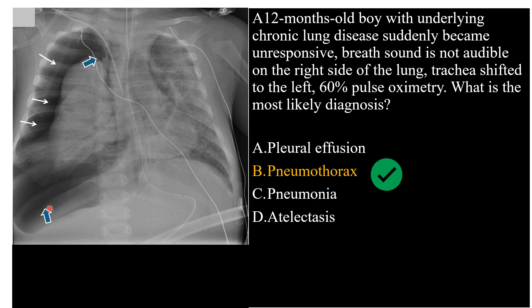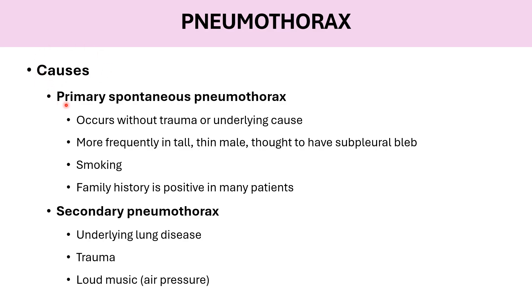There is a large amount of air in the right pleura with shift of the mediastinum to the left — a classic case of pneumothorax. Causes: primary spontaneous pneumothorax occurs without trauma or underlying cause, more frequently seen in tall thin males, associated with pleural blebs and smoking, with possible positive family history. Secondary pneumothorax is associated with underlying lung disease, trauma, or even loud music causing air pressure changes.